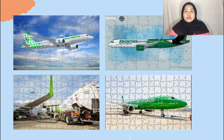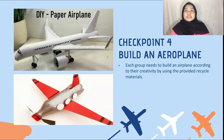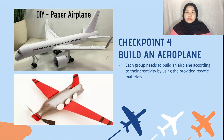Each puzzle has 40 pieces. Checkpoint number four is build an airplane. Each group needs to build an airplane based on their creativity using the provided recycled materials. We have prepared materials such as plastic bottles, recycled paper, newspaper, toilet paper rolls, and boxes. The committee member will choose the most creative airplane that has been built, and bonus marks will be given to that group.